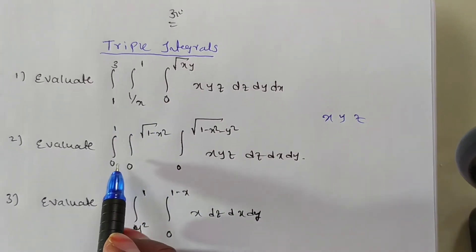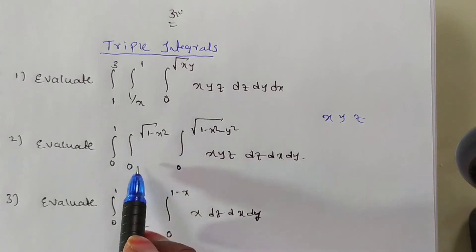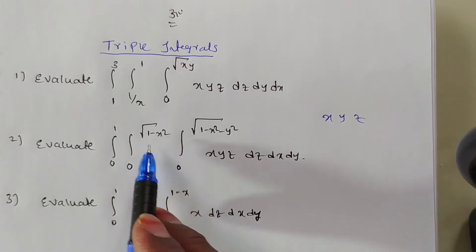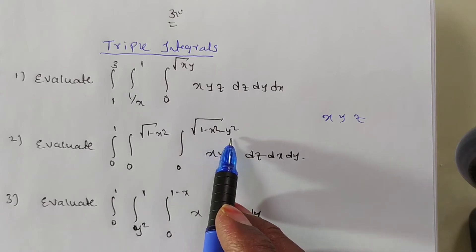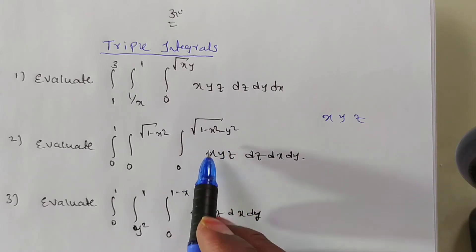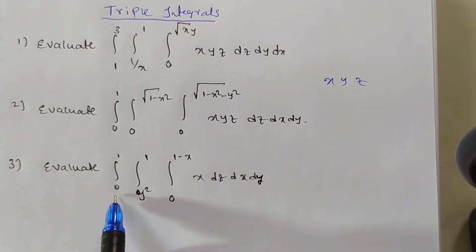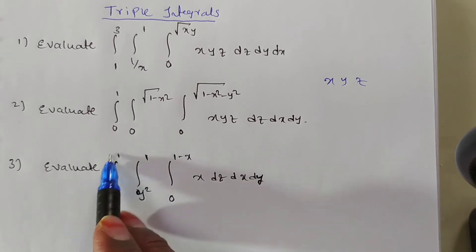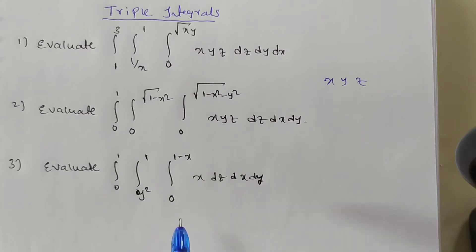For the second problem: 0 to 1 is independent, 0 to root of 1 minus x squared is dependent on one variable, and 0 to square root of 1 minus x squared minus y squared is dependent on two variables. For the third problem: 0 to 1 is independent, y squared to 1 is dependent on y, and 0 to 1 minus x is dependent on x.